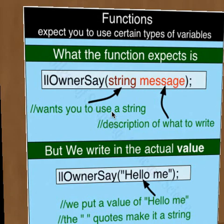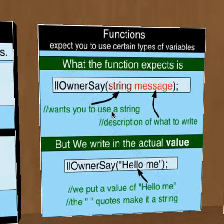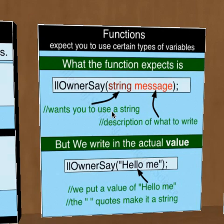Now let's take a closer look at the owner say function. It wants you to use a string variable. A string is just text surrounded by quotes. Where it says owner say string message, this is telling you to use a string, but you will write in an actual value. So we write: owner say, open parenthesis, open quote, hello me, closed quotes. The quotes are what make "hello me" a string. At the very end of the function, we put a semicolon, which ends the statement. We use a semicolon to end every function.